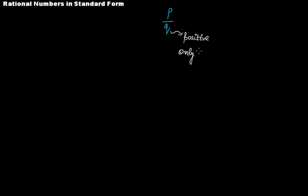That common factor has to be the integer one — no other number can be a common factor other than one. So p over q is said to be in its standard form if q is positive (the first condition) and the second condition is that the two integers have only one common factor, and that is one.